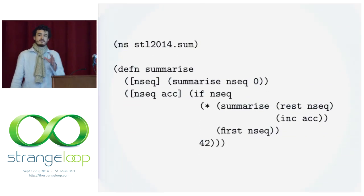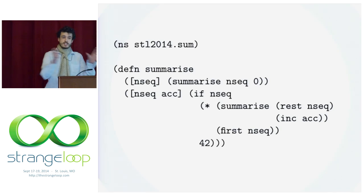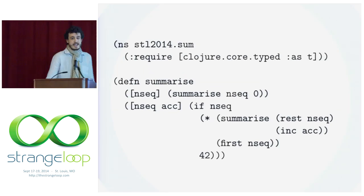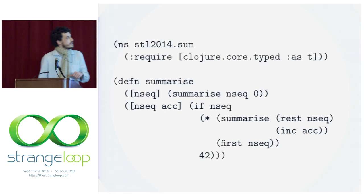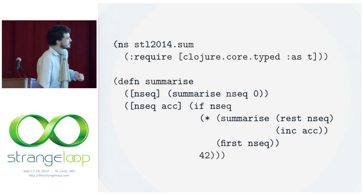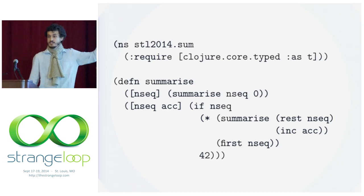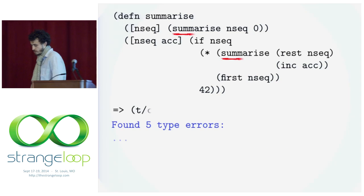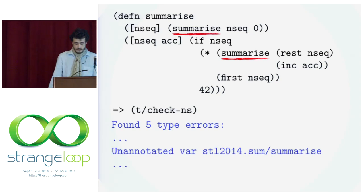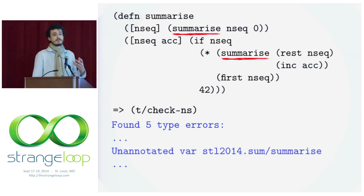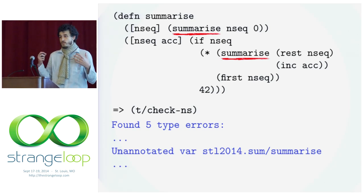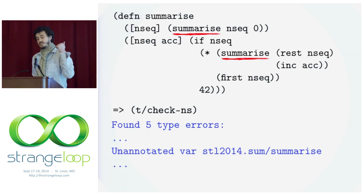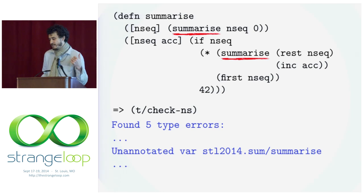The first thing to do when converting closure to type closure is to add a namespace dependency to our closure code. This is now typed code. We run the type checker and we get back some errors. The first time we run the type checker over some code, we're very likely to get this error, which is an unannotated var.